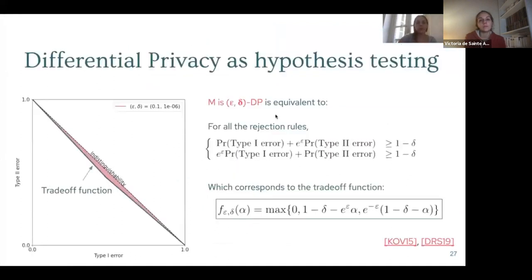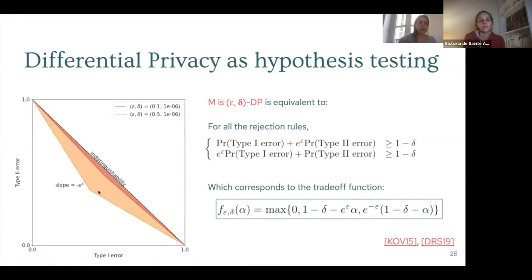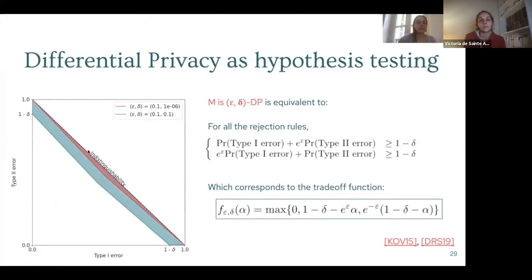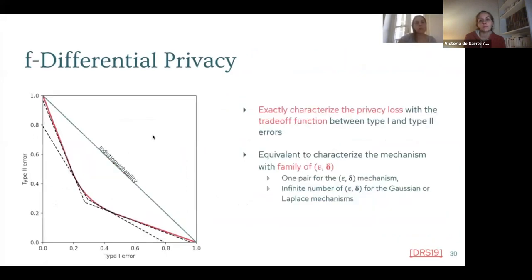Traditionally in differential privacy, we characterize the privacy loss of a mechanism with epsilon and delta parameters. These can be converted into a trade-off function — shown here in green — where the slope is given by epsilon and the coordinate at the origin is given by delta. The further from the indistinguishability line, the less private the mechanism.